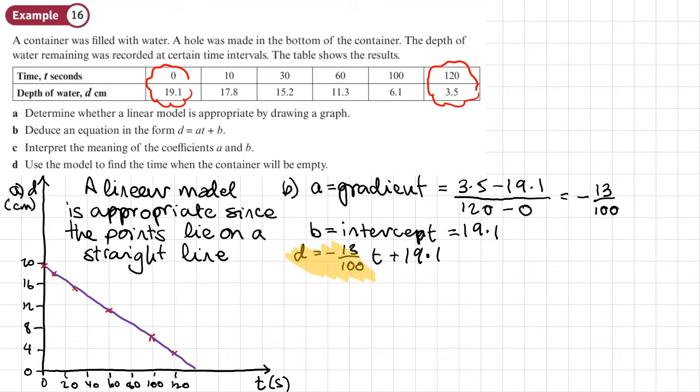OK, so we're now ready to move on to part C. Interpret the meaning of the coefficients A and B. Now, interpret does not mean A is the gradient, B is the intercept. Interpret means look at what the question is about and make sure that we're talking about time and we're talking about depth of water. So let's start with A.